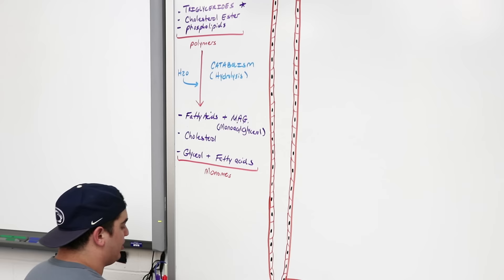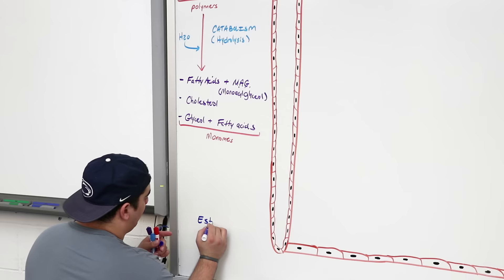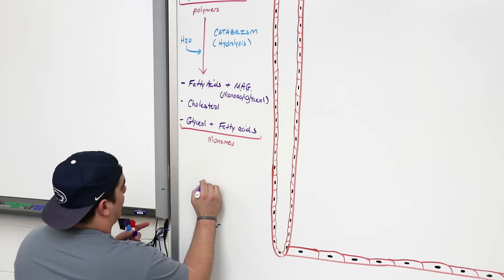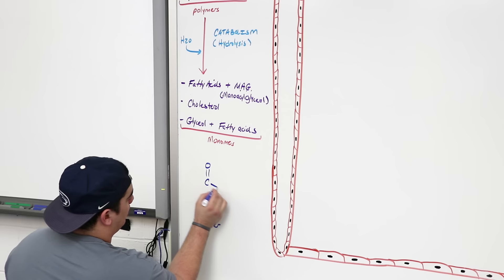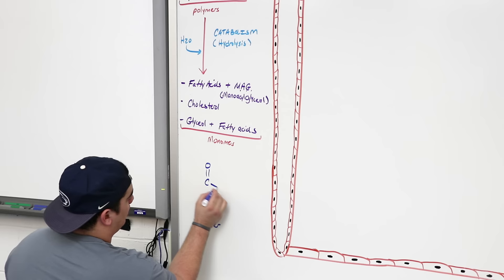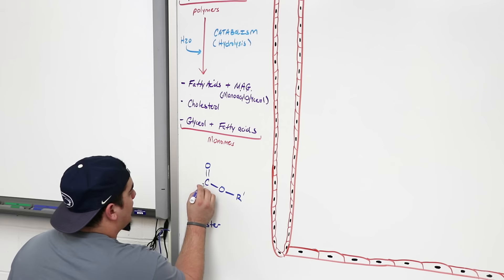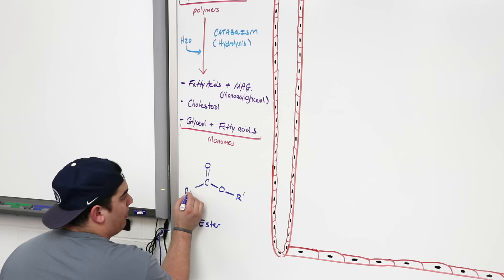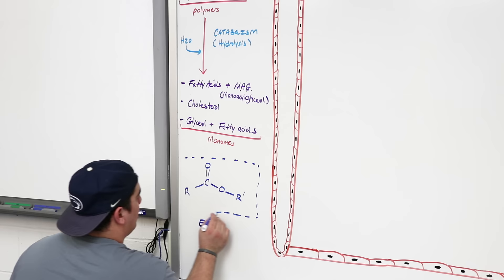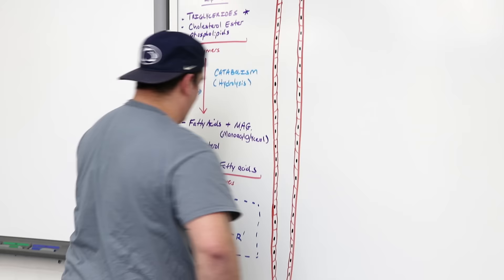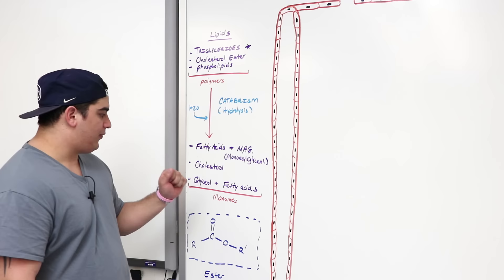A little bit of structure on the ester bond: the basic structure of an ester — if you've taken biochemistry or organic chemistry — is you have what's called a carbonyl compound: a carbon doubly bonded to an oxygen, singly bonded to another oxygen, which is bound to some carbon groups, hydrocarbons. Coming off the other side, there's a carbon doubly bonded to an oxygen also bound to hydrocarbons. This is the basic structure of what we refer to as an ester.